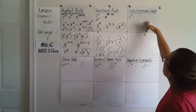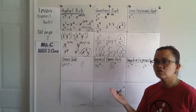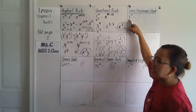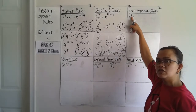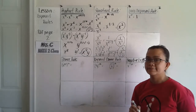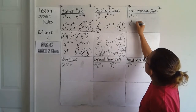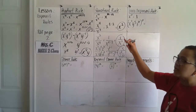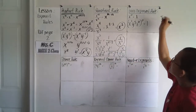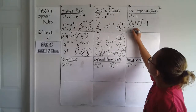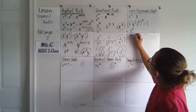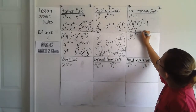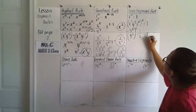Next, zero exponent rule. Any base raised to the 0 power, except 0 itself, equals 1. So x raised to the 0 power equals 1. Example: x squared, y to the 4th, z to the 10th, all raised to 0 — everything equals 1. Another example: x raised to 4 over y cubed, all raised to 0 — that's 1 over 1, which equals 1.